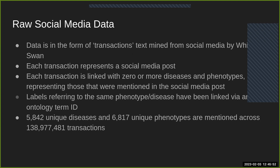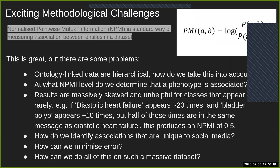We have an incredibly large amount of these social media posts mentioning diseases and phenotypes together — nearly 139 million — and that informs some of the methodological problems we'll discuss. We're using this raw co-occurrence information to identify associations. A very standard way of quantifying relationships between things appearing in a corpus is pointwise mutual information (PMI).